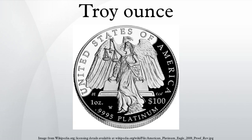One troy ounce is equivalent to approximately 1.09714 avoirdupois ounces. The troy ounce is part of the troy weight system, many aspects of which were indirectly derived from the Roman monetary system. The Romans used bronze bars of varying weights as currency.